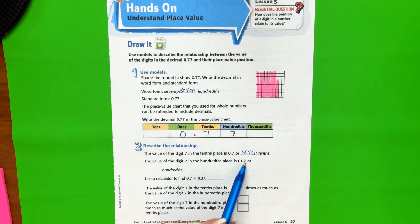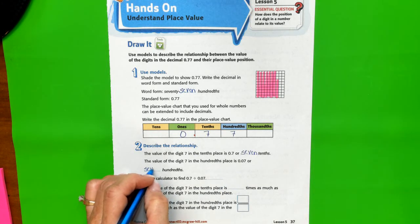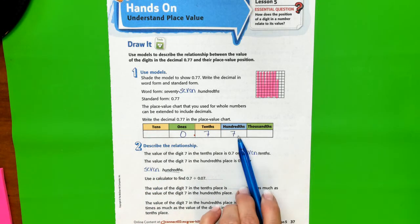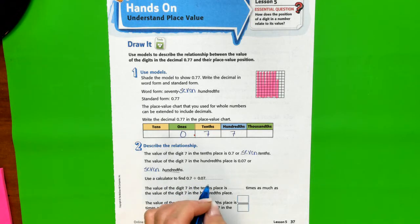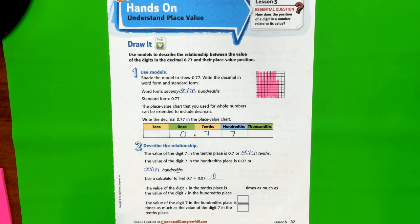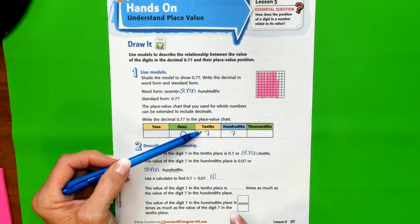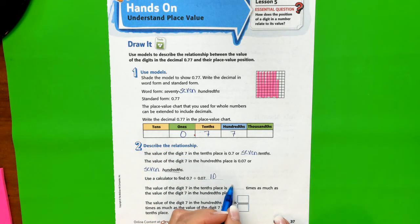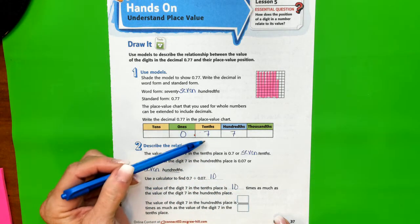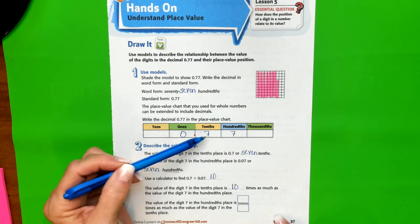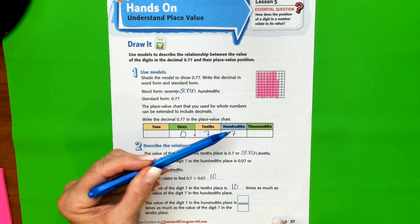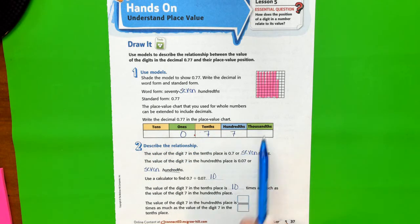It says use a calculator to find 0.7 divided by 0.07. If you do that, you'll get ten. The value of the digit seven in the tenths place is 10 times as much as the value of the digit in the hundredths place. These numbers continue to become smaller pieces - this is 10 times more than that, this is 10 times more than whatever might be here.